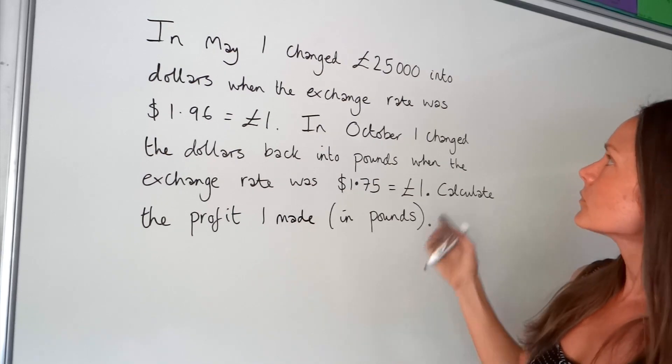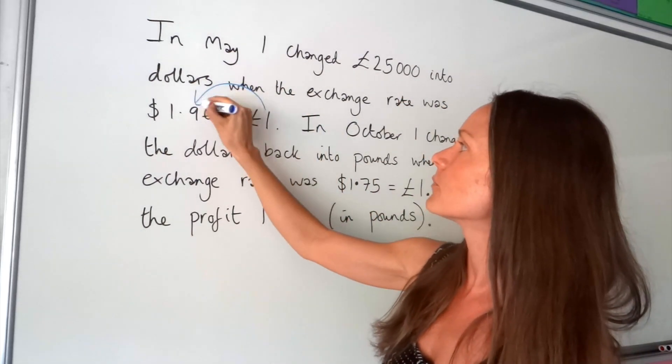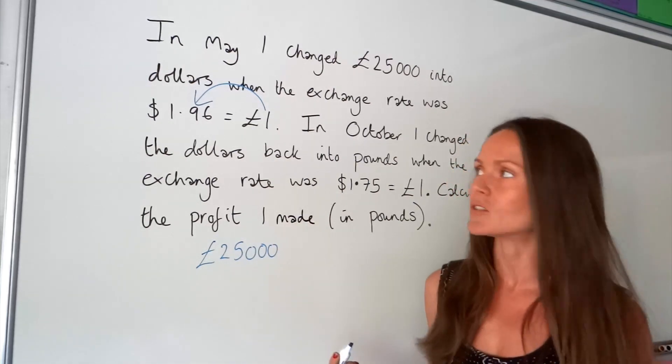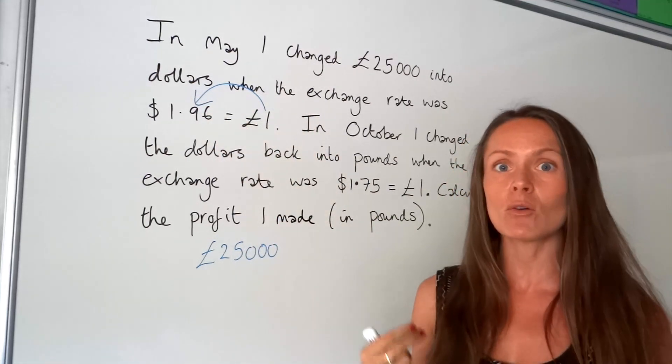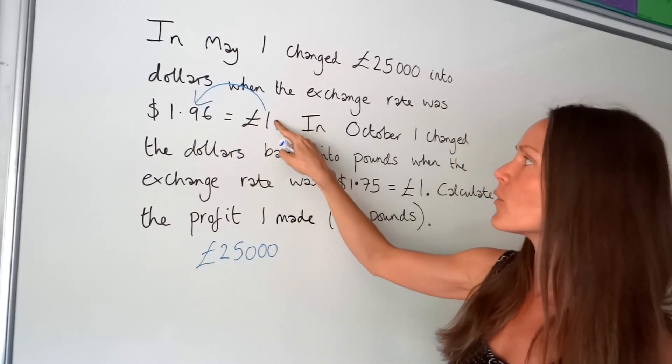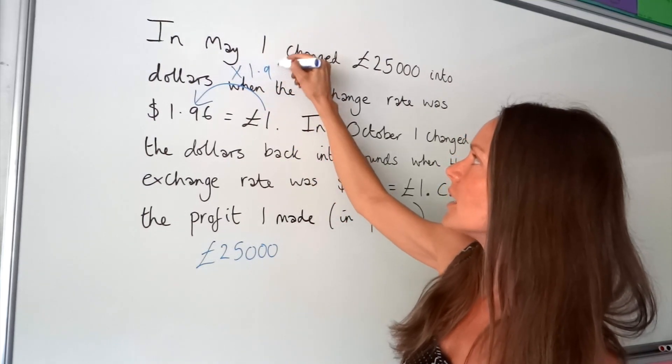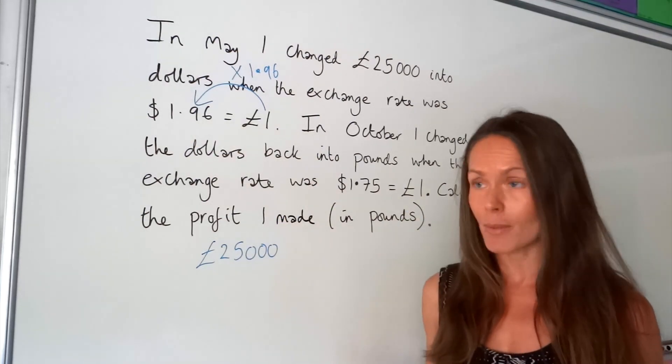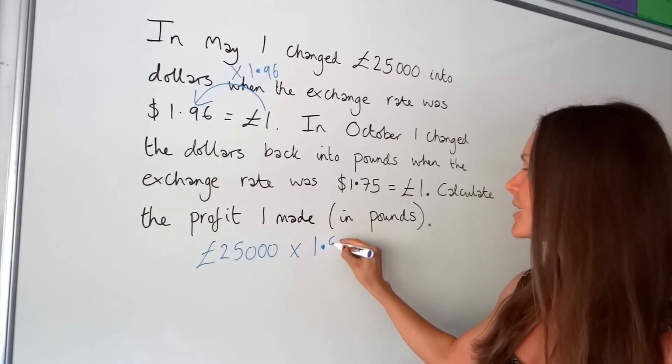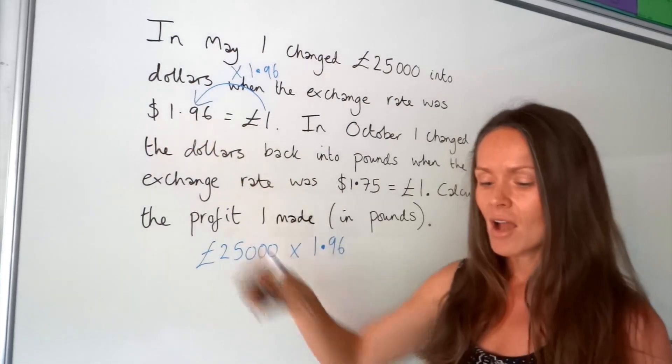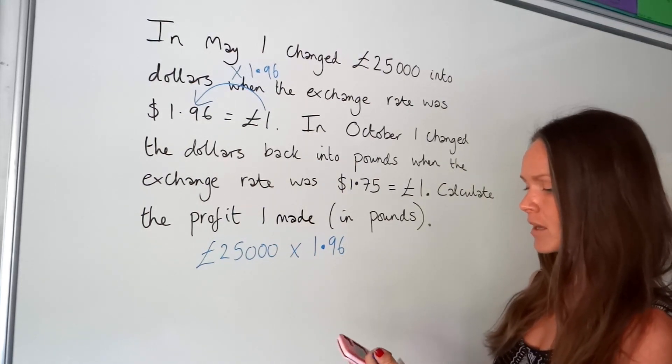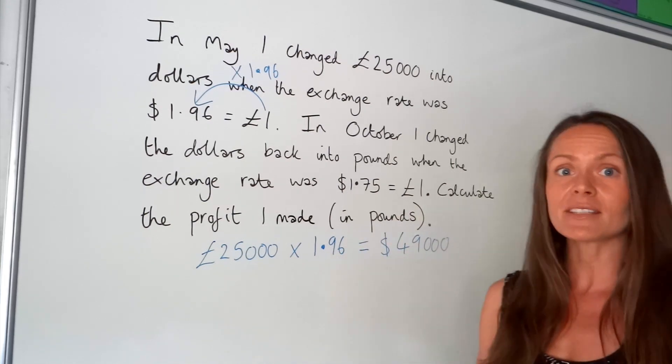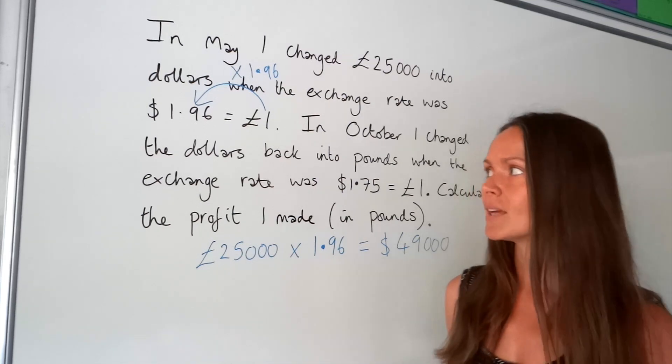To begin with, we're changing pounds into dollars. I'm going to take my pounds here, £25,000, and I'm going to try and work out what that is in dollars. Remember, to change, you're either timesing or dividing by the number that's not 1. To get from 1 to this number, well, we have to multiply it by 1.96. Because 1 times 1.96 gives me the 1.96. I have to do the same with the money that I'm exchanging. I have to multiply that by 1.96 in order to turn it into dollars. I pop that in the calculator. That gives me a nice whole number. I've got $49,000. This is how much I've got now in dollars.